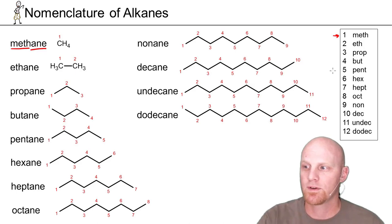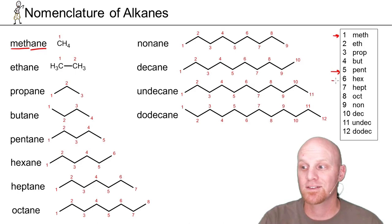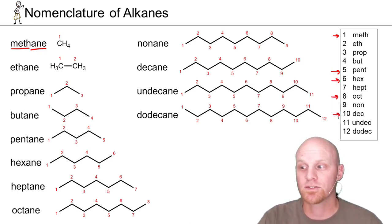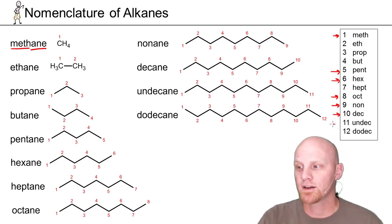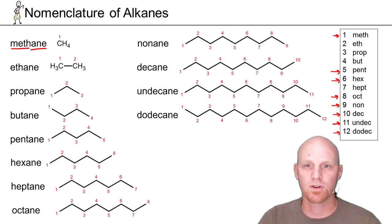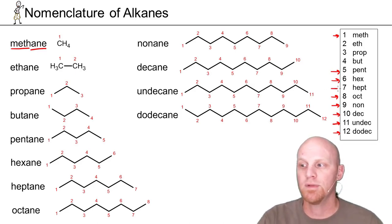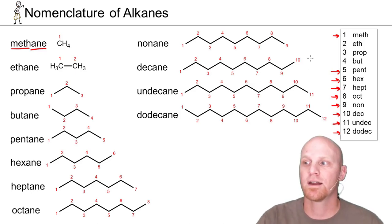Students don't usually struggle with pent since a pentagon has five sides, hex since a hexagon has six sides, oct since an octagon has eight sides, or dec since a decade has 10 years. Non is fine since it sounds like nine, and undec and dodec are like decade plus one and plus two — 11 and 12 carbons. But hept meaning seven is probably new for most students, so that one you just have to commit to memory.